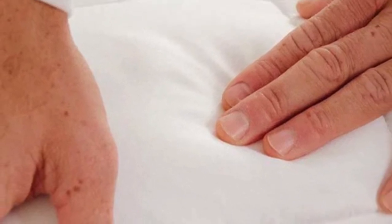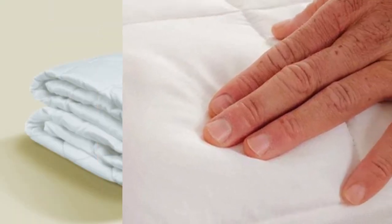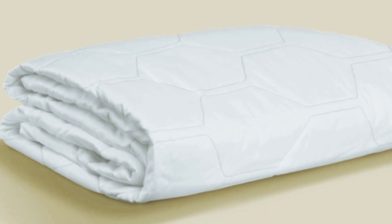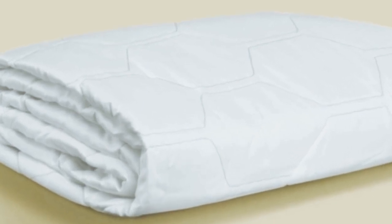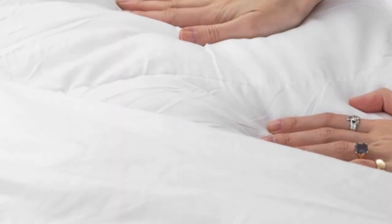Pros: Breathable tensile-based Outlast fabric cover helps regulate temperature. Down-alternative fiber fill provides gentle padding.